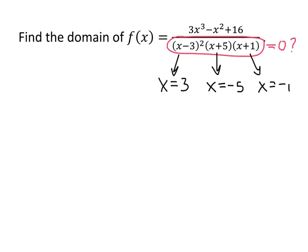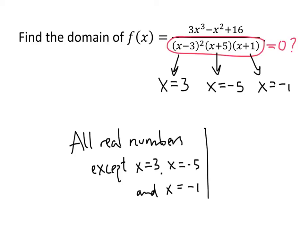But again, just like in the previous problem, those are the numbers that we have to exclude. So our answer to the question is all real numbers except x equals 3, x equals negative 5, and x equals negative 1. Those are the numbers that we cannot plug into this function. We can plug in anything else, but not those three numbers. And that's our solution.